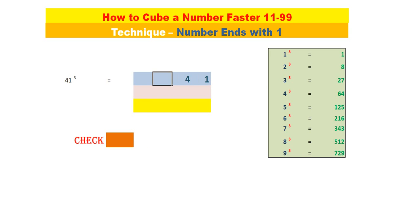For 41, 4 squared is 16 and 4 cubed is 64. For the second and third digits, we will double them. So 16 doubled is 32, and 4 doubled is 8.